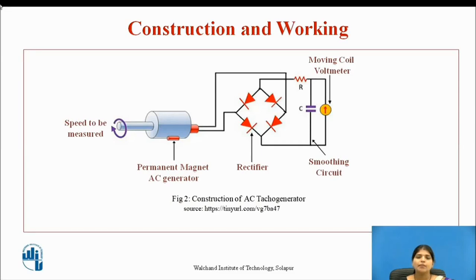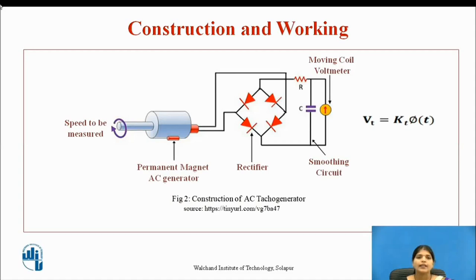As the rotor rotates, a voltage is induced in the secondary winding whose magnitude is proportional to the rotor speed. The equation is: Vt = Kt × φ(t), where Vt is the voltage, φ(t) is the rotor speed, and Kt is the tachogenerator constant. This output is in phase with the applied voltage to the reference coil.